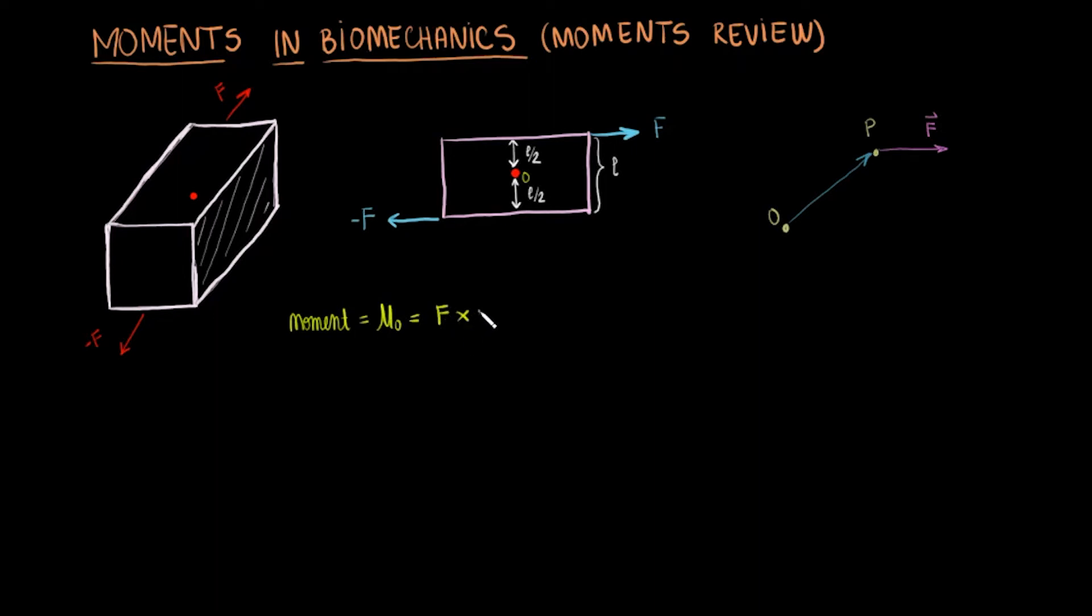On the other hand, the moment vector direction is along the axis about which the moment will rotate the body. This axis is orthogonal to the plane containing the force vector and the moment arm vector.